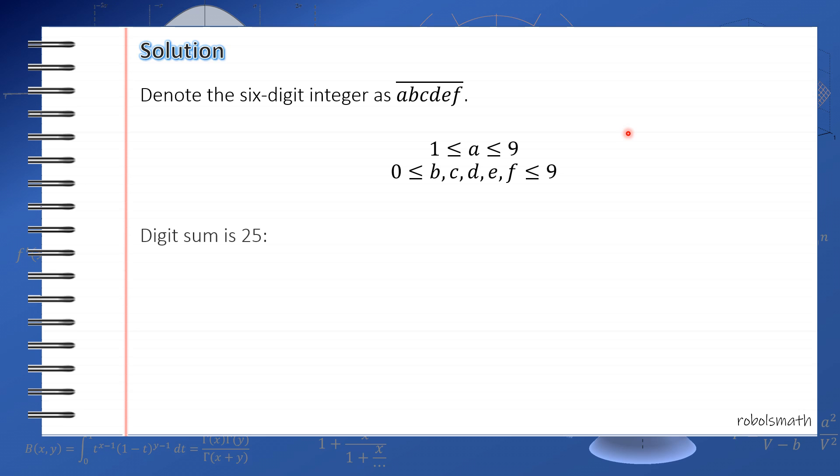Now since the digit sum is 25, then the sum of variables is 25. Now if we want non-negative integer solutions, then we can find the total number of solutions by stars and bars, which since the sum is 25 and you have 6 variables, that's 25 plus 6 minus 1 taken 6 minus 1, which is equal to 30 taken 5. Quite easy.